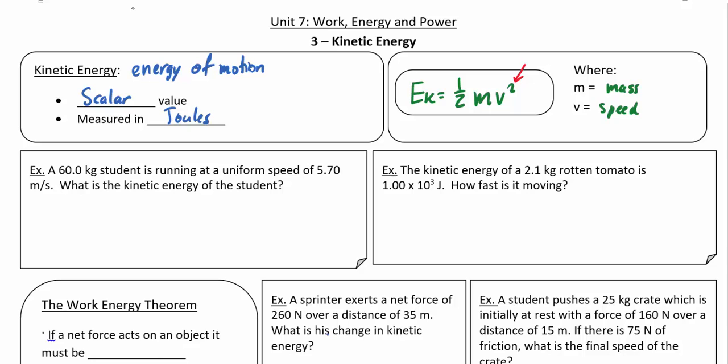Let's look at a couple examples. We've got a student running at a uniform speed of 5.7 meters per second. What's their kinetic energy? Since Ek equals one half mv squared, one half times 60 times 5.7 squared gives us right around 975 joules of energy.